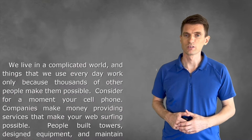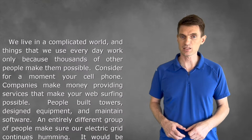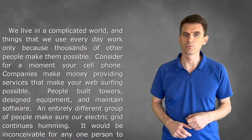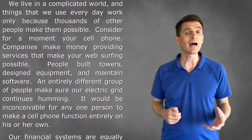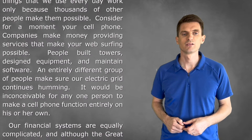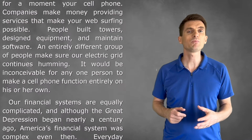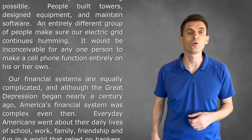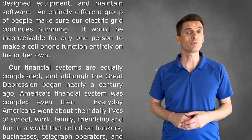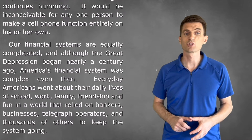Let's get started with our introduction. We live in a complicated world, and things that we use every day work only because thousands of other people make them possible. Consider for a moment your cell phone. Companies make money providing services that make your web surfing possible. People built towers, designed equipment, and maintained software. An entirely different group of people make sure our electric grid continues humming. It would be inconceivable for any one person to make a cell phone function entirely on his or her own. Our financial systems are equally complicated, and although the Great Depression began nearly a century ago, America's financial system was complex even then.